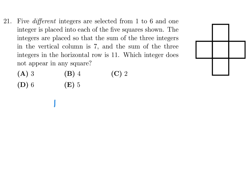We have to choose from these six integers, and the first criteria is the vertical column — top to bottom — has to equal 7. So I've got to choose three numbers that equal 7. I'll choose the 1, the 2, and the 4. I think that's the only way of doing it. So I'll put the 1 here, 2 here, and the 4 here.